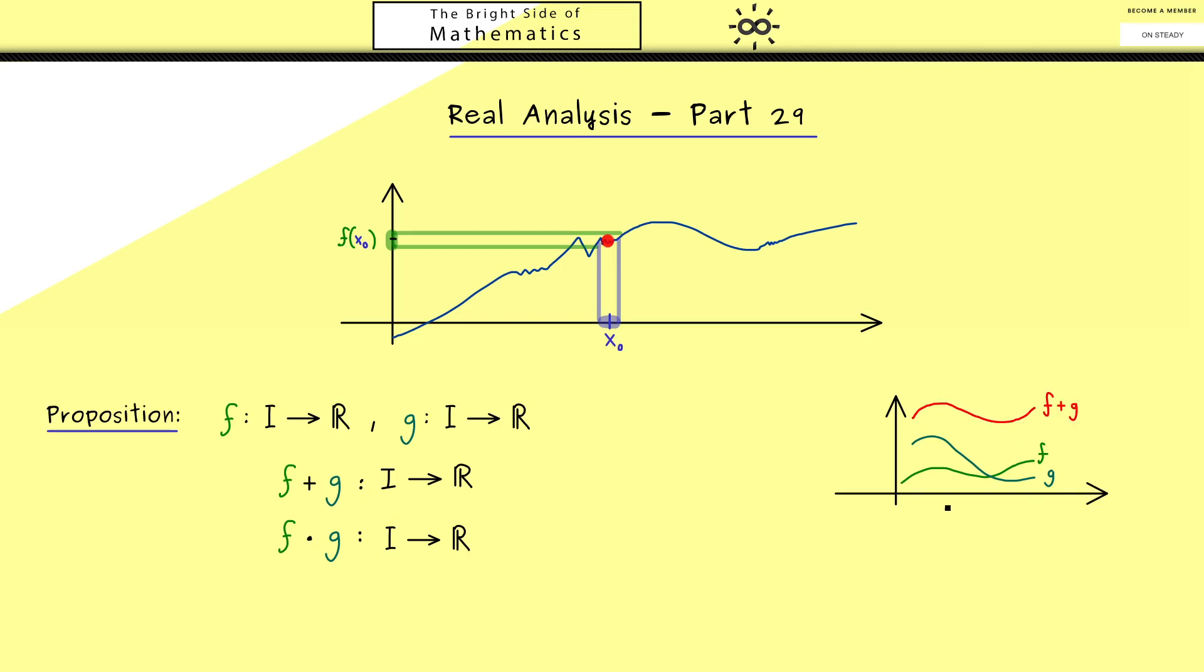In other words, these two graphs here give us a new graph there. Now the question is what happens with the continuity when we fix one point x₀ here. The result is not so surprising: if f and g are continuous at this point, then also f plus g. Of course this is very helpful, if we put in continuity for both functions we get out continuity for the addition. And in the same way we get the continuity for the product.